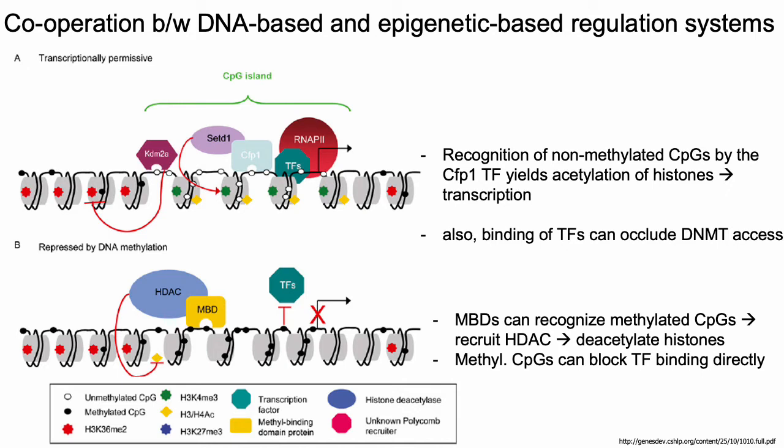Similarly, there exist sets of methyl binding domains or MBDs that can bind to and recognize methylated CpGs. These MBDs then recruit other factors like histone deacetylases, which deacetylate nearby histones and shut down gene expression at nearby genes. Also, methylated CpGs can block or change TF binding and therefore effectively prevent or reduce the amount of TF binding to those promoters.